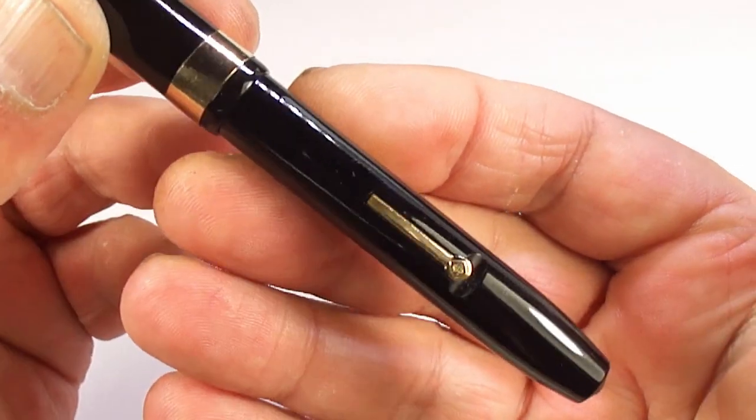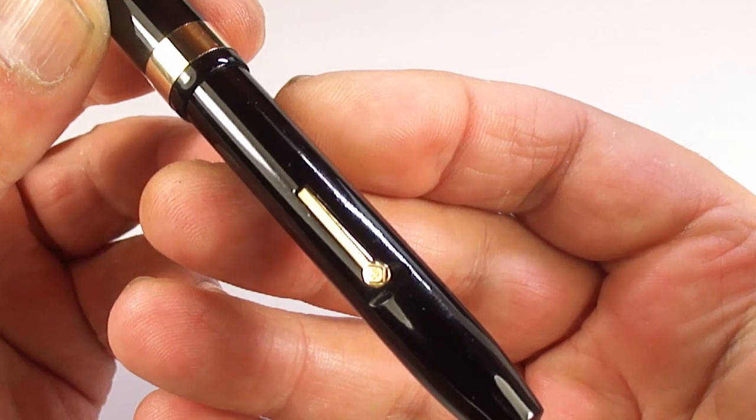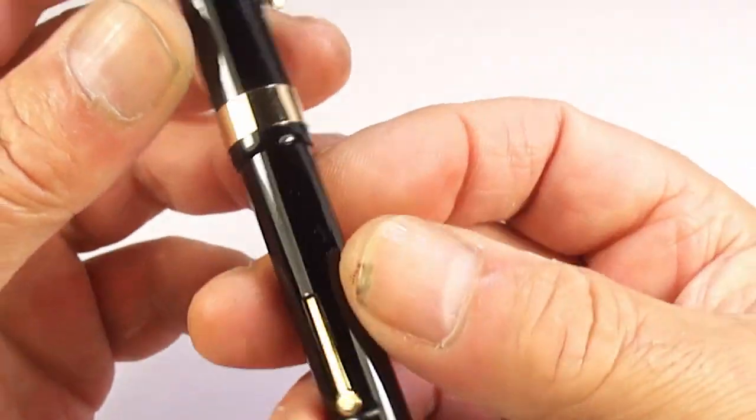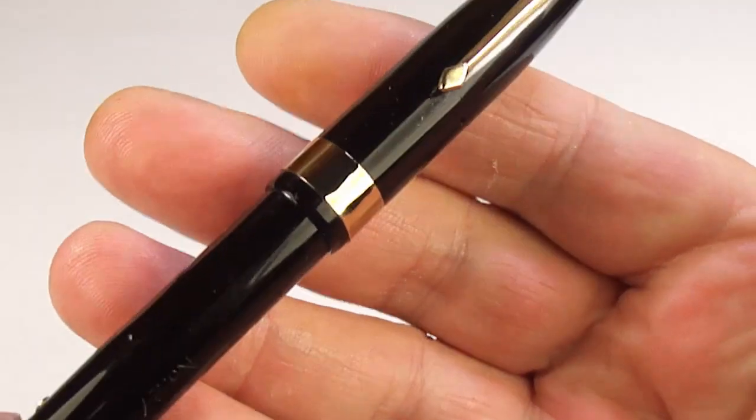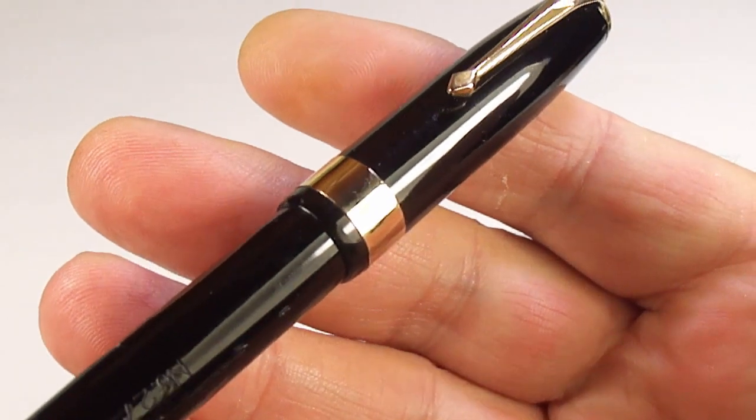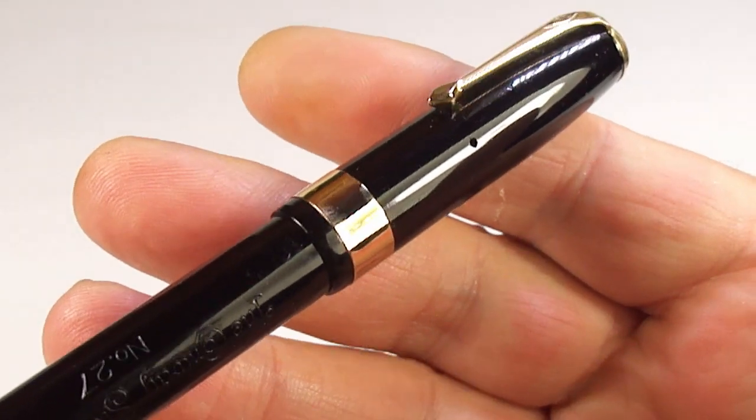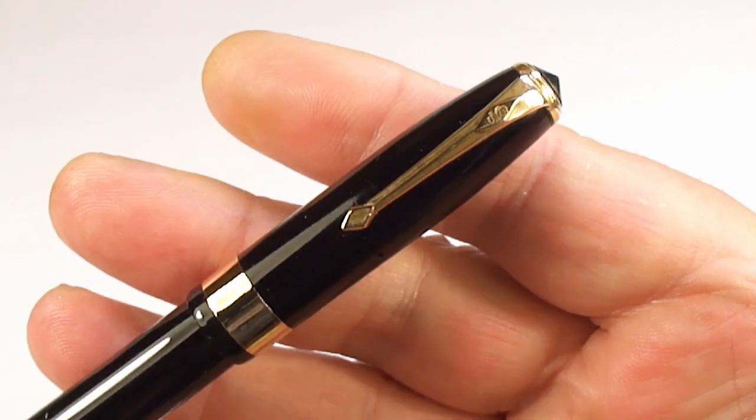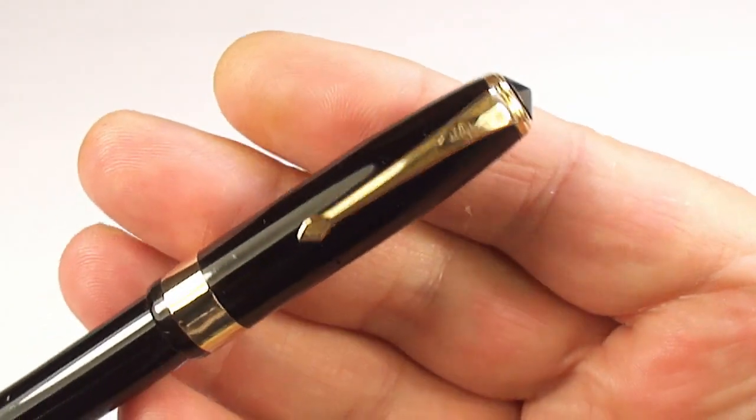As we said earlier, it comes with gold filled trim. You can see we've got this gold filled Conway Stewart lever here. If we take you up to the cap, you'll see it's got this quite large gold filled cap band and the very recognizable Conway Stewart clip.